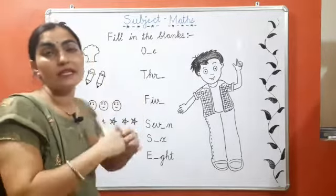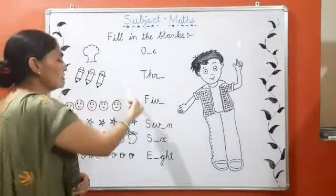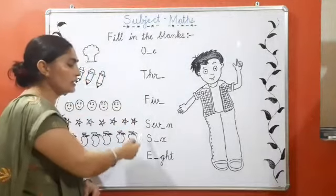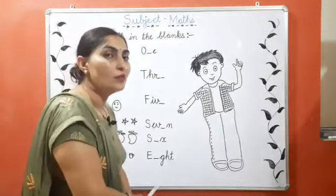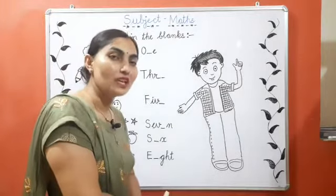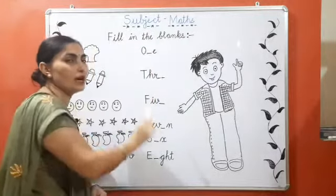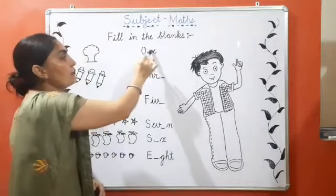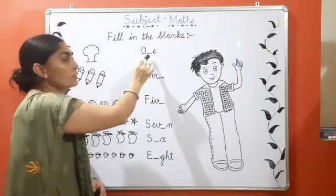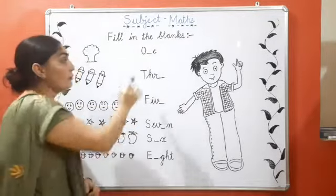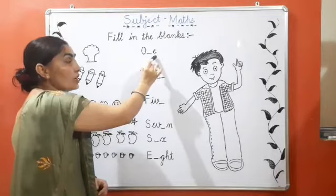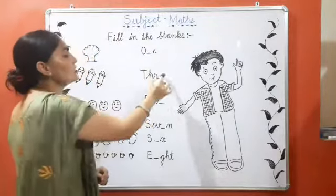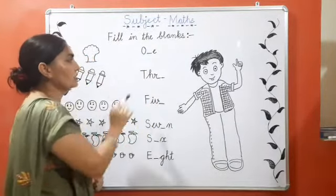Toh wo hum kaise karenge? Ma'am has drawn some pics here, and on one side, I have written number names. Numbers ke names yahaan par ma'am ne write kar rakhye hain. But look carefully, ma'am has left space. Ma'am ne space chhodha hua hai between the spellings. Ma'am ne kai jagahe par dhyan se dhekho.